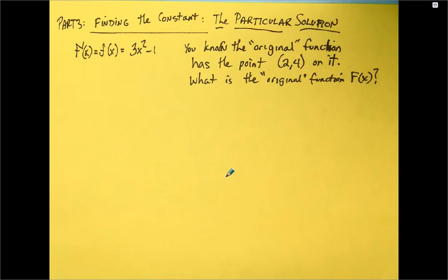Alright, part three, finding that constant. Now, we are looking for something called a particular solution, which means that there's an infinite number of solutions if we don't know what that constant is. But if we do know what that constant is, then we can use initial conditions to figure it out.